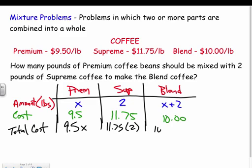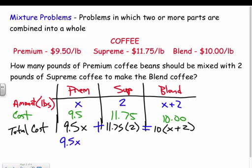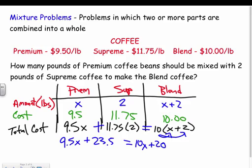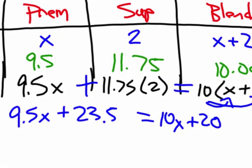For the blend the total cost is 10 times (x + 2), so it needs parentheses. The equation is: total cost of premium plus total cost of supreme equals total cost of the blend. That gives us 9.5x + 11.75(2) = 10(x + 2). Multiplying 11.75 times 2 gives 23.5. Distributing the right side: 10x + 20. So the equation is 9.5x + 23.5 = 10x + 20.